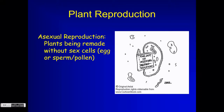For plants, sex cells means egg cells and pollen — pollen is the male sex cell, so you can think of it as sperm. Sexual reproduction requires egg and sperm; for asexual reproduction none of those are involved. This doesn't involve using flowers at all, and flowers are the reproductive parts of plants.